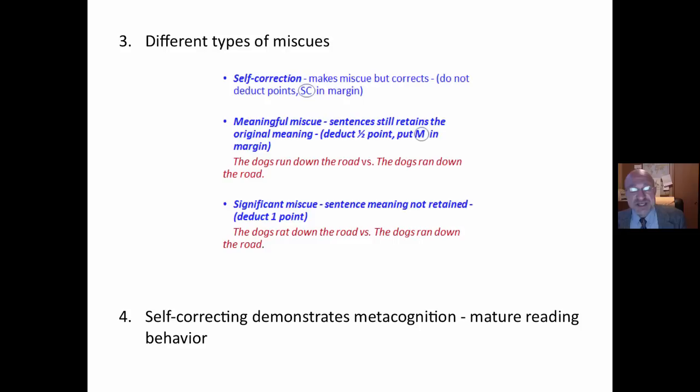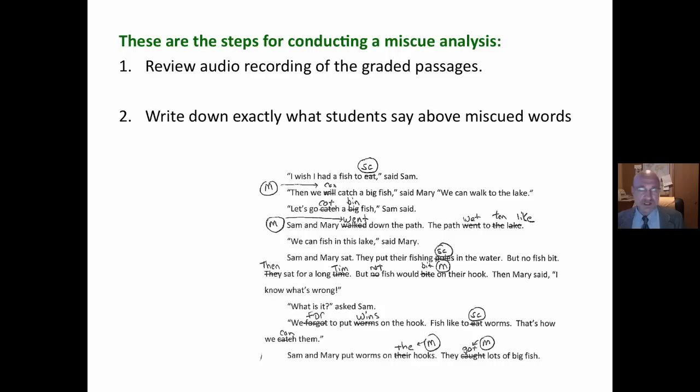And then a significant miscue is when what they say doesn't make sense at all. The dog's rat down the road versus the dog's ran down the road. That is a miscue any way that you say it. And again, self-correcting demonstrates mature reading behavior. Metacognition, does this make sense? And the same with a meaningful miscue. They're still using what's in their head to create meaning with what's on the page.